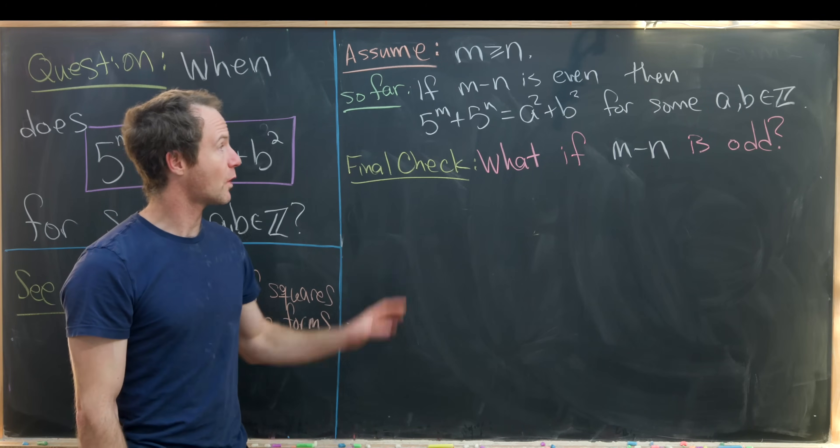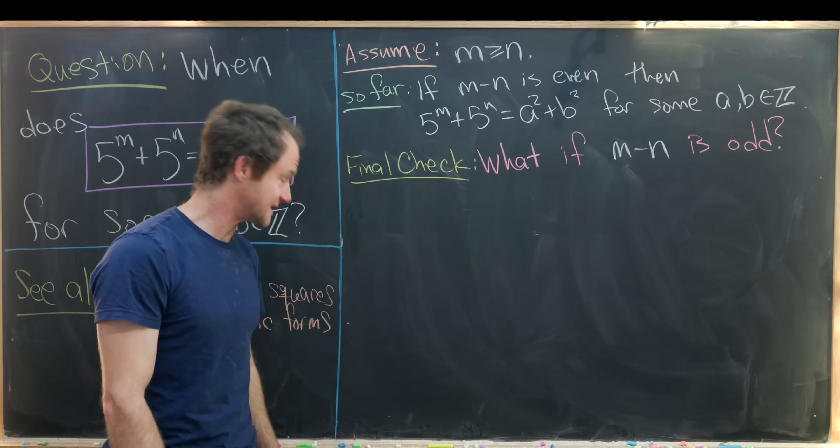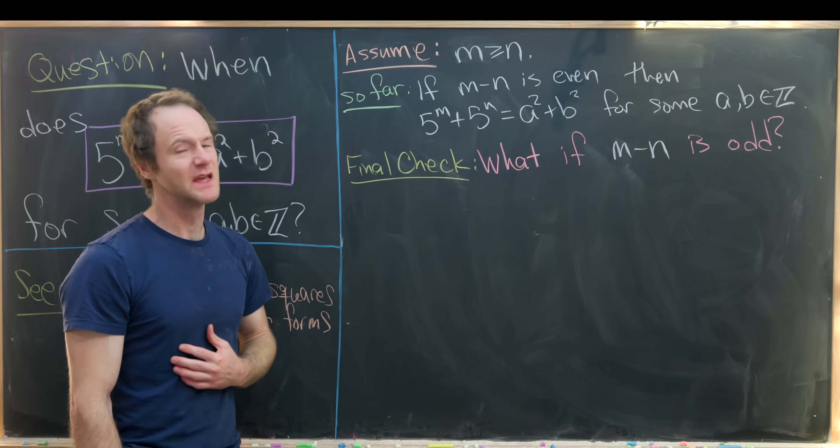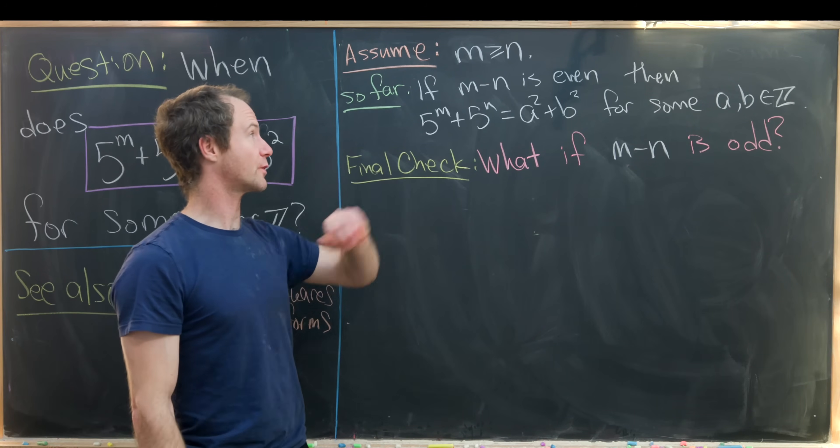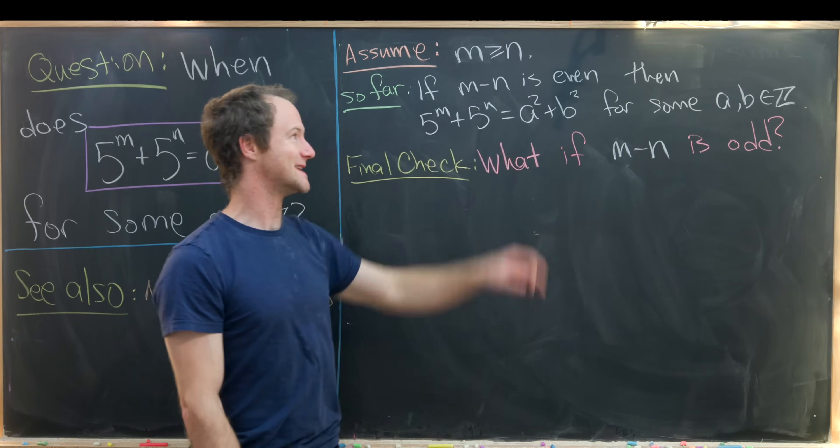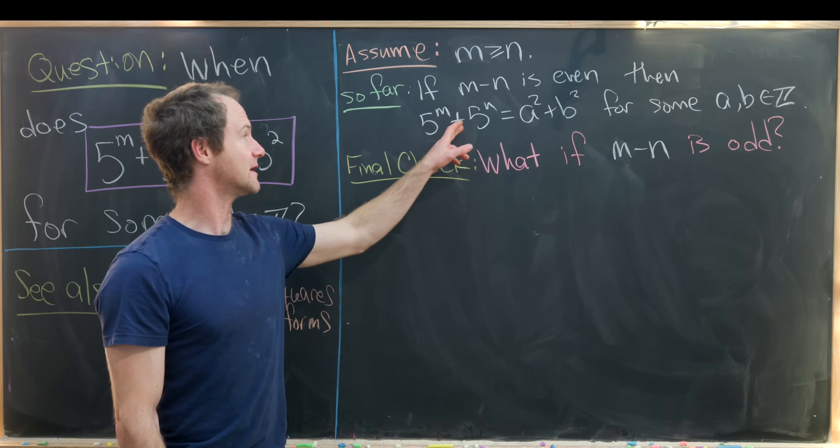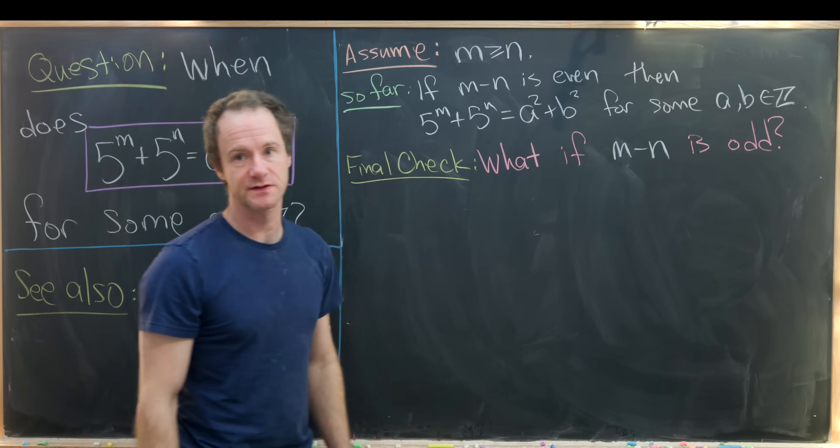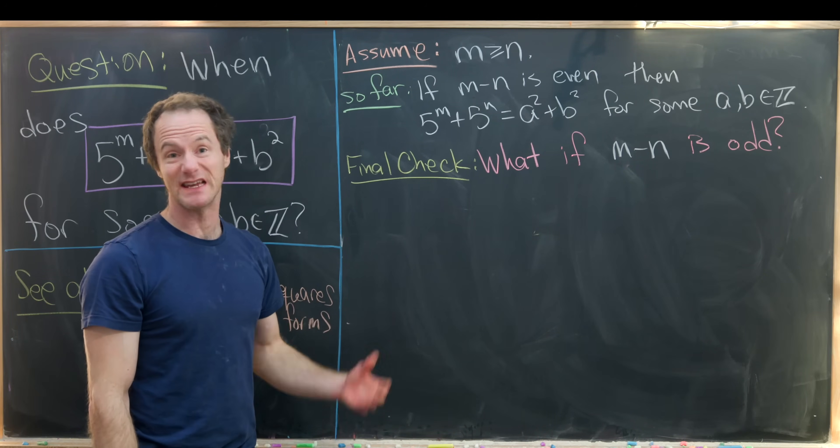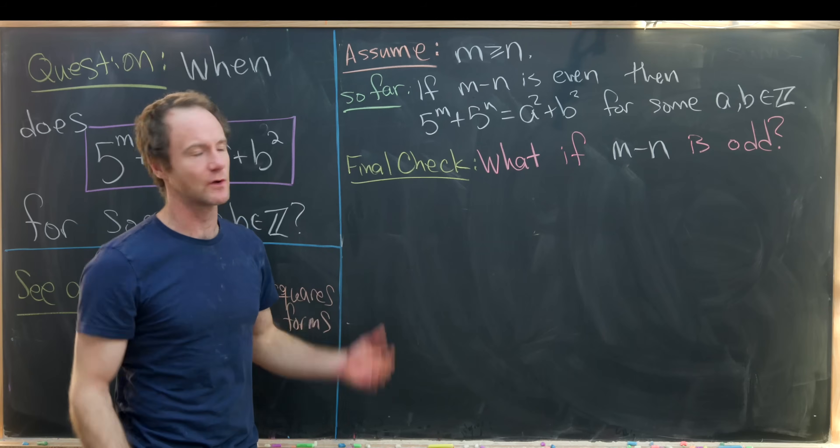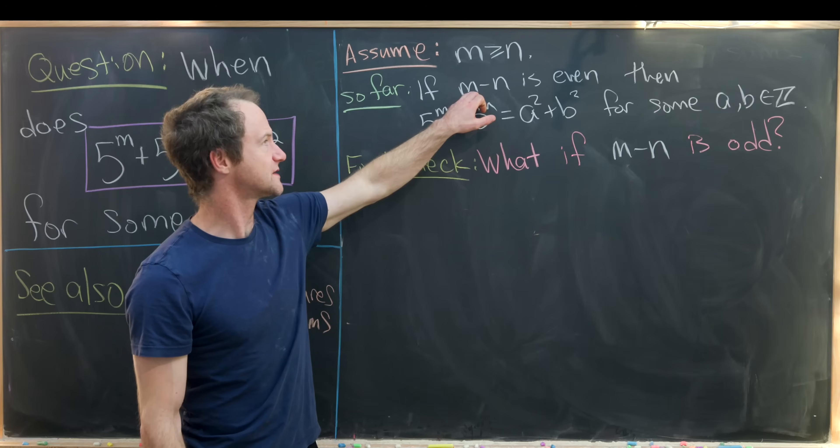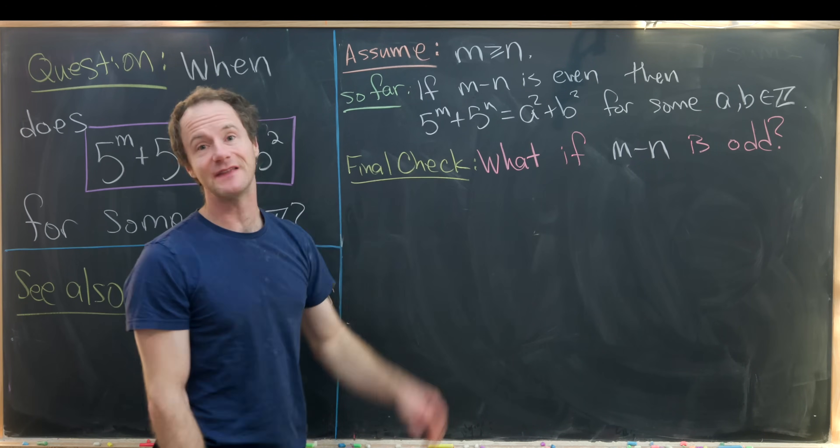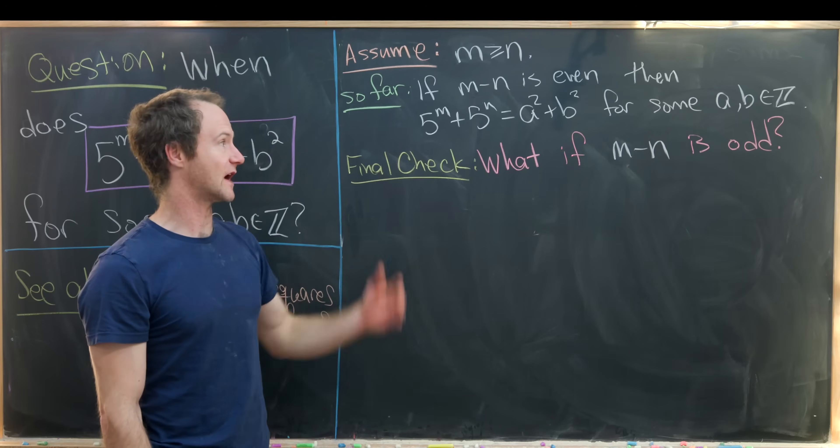Okay, let's get rid of this and we'll look at the last sub case when m minus n is odd. So far we've proven that if m minus n is even then 5 to the m plus 5 to the n is the sum of two squares. Notice that includes the case when m equals n because zero is an even number. Furthermore this also includes the case when we have the ordering in the other direction. And in fact I don't think we're going to need this ordering anymore now that we've gotten this far.